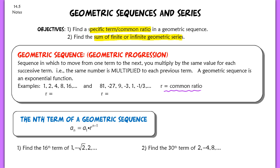A geometric sequence is actually an exponential function. Just like an arithmetic sequence is a linear function, a geometric sequence is an exponential function. The general form y equals a times b to the x is that general form for an exponential function.